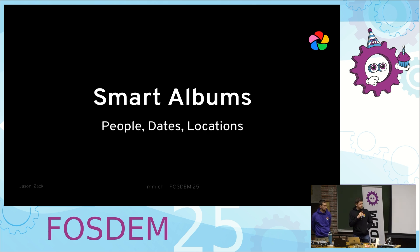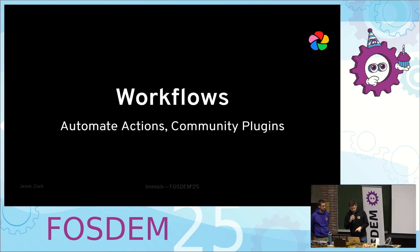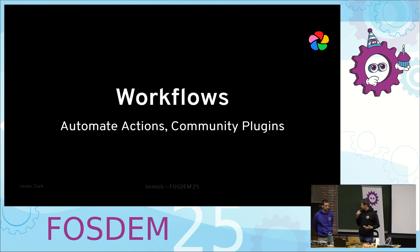Smart albums is one we've wanted for a long time. The idea is you'll be able to use any metadata, people, dates, or locations, as well as search terms — and if a photo matches with confidence over a certain threshold, it will automatically go into an album and update whenever new photos are uploaded. This is powered by another feature called Workflows, which will allow automation across any action on the server: automated tagging, automated albums, automatically adding users to albums if a certain person appears, creating shared links, or external integrations like auto-sharing to Facebook if something meets certain criteria.